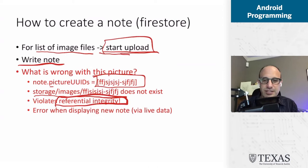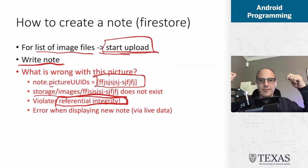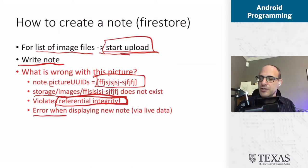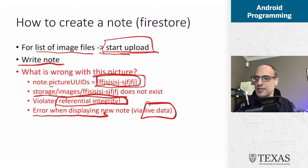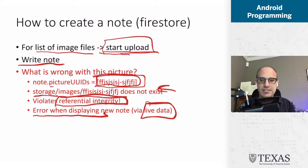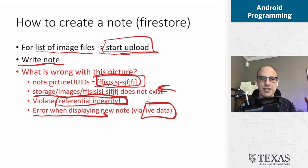Why is violating referential integrity a problem? Because this upload is started on one thread, and on another thread I write this note. When I write that note, live data updates — that live data fetches the note and says 'there's a great picture waiting for me in the cloud database.' But that file doesn't exist yet. The app crashes or displays the wrong output to the user. This is an unsatisfying situation.